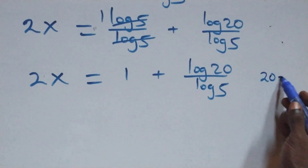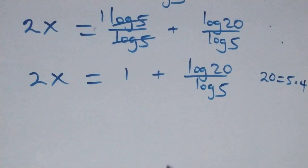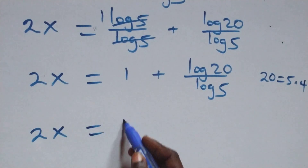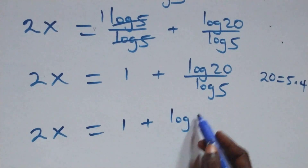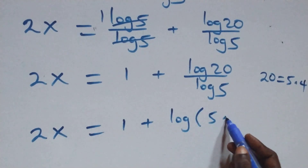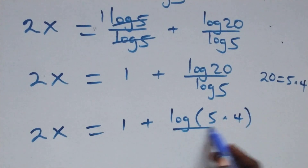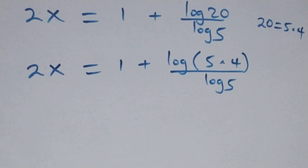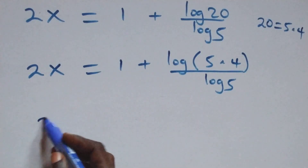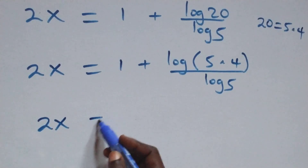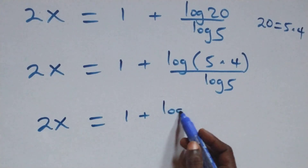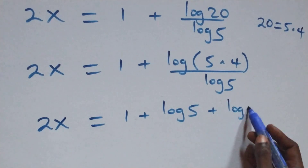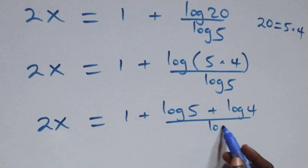Also here, 20 can be written as 5 times 4. All we have becomes 2x equals 1 plus log(5 times 4) over log 5. This also follows the product law of logarithms, so all we have becomes 2x equals 1 plus (log 5 plus log 4) over log 5.